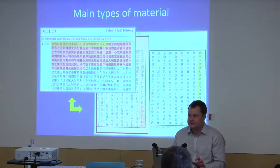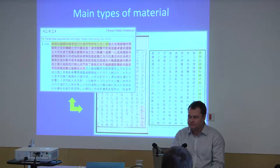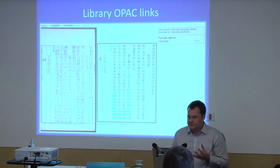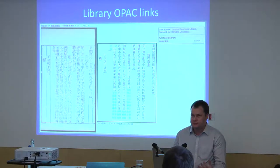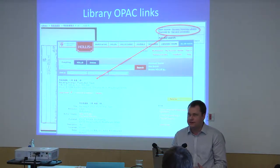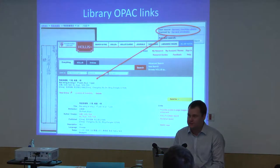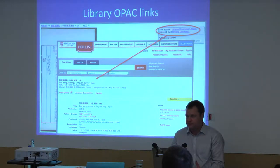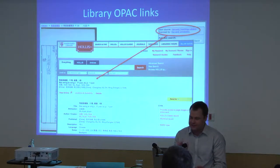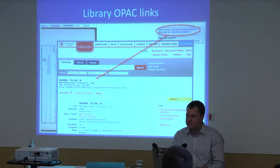These are not two different copies of the text — these are the same copy visualized in two different ways. For materials contributed by libraries, we try to preserve direct links back to the library catalog. For the Harvard Yenching materials, you can directly click a link and open the catalog entry for the particular copy scanned to produce the images shown here. This allows us to offload a lot of metadata concerns to librarians who are specialists in this.